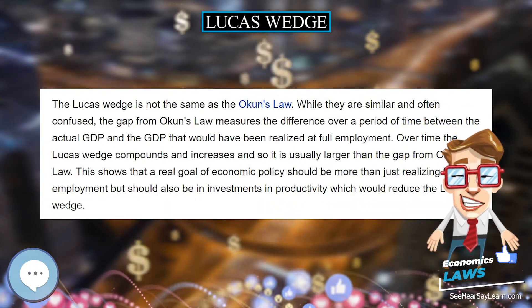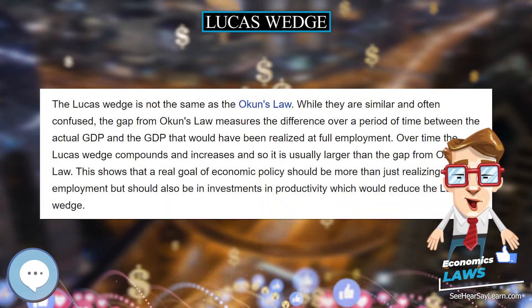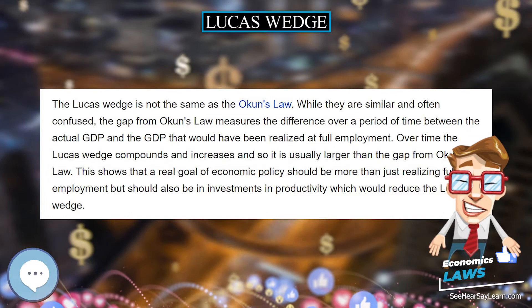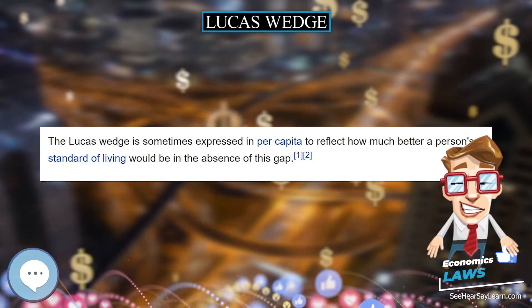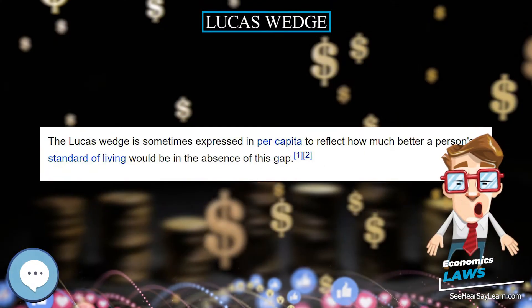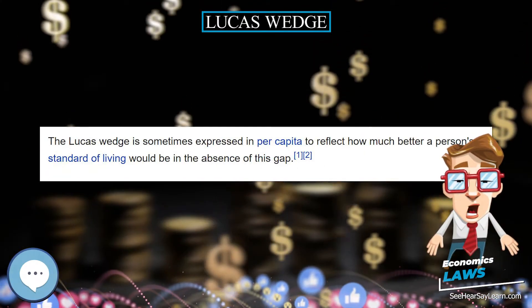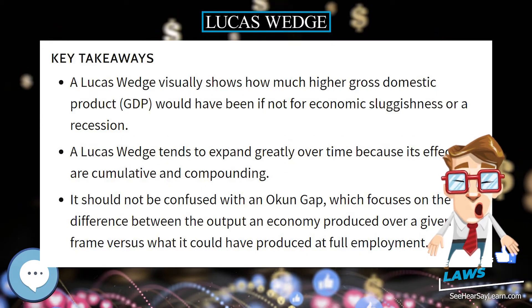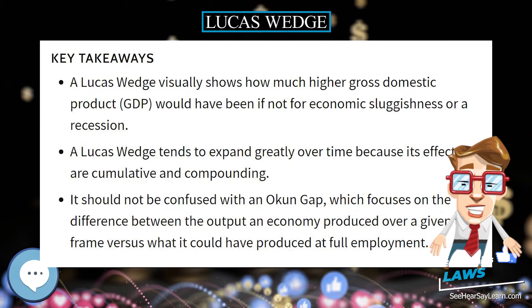A Lucas wedge was named after Robert E. Lucas Jr., an American who won the 1995 Nobel Memorial Prize in Economic Sciences for his research on rational expectations.